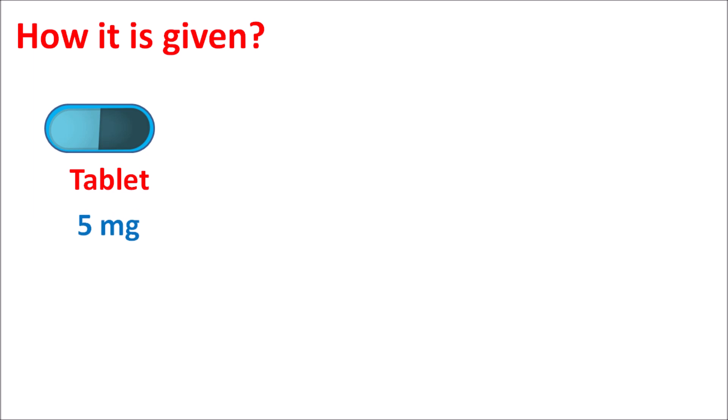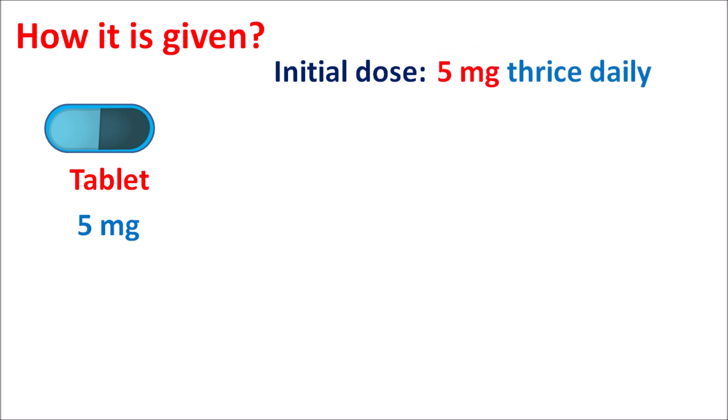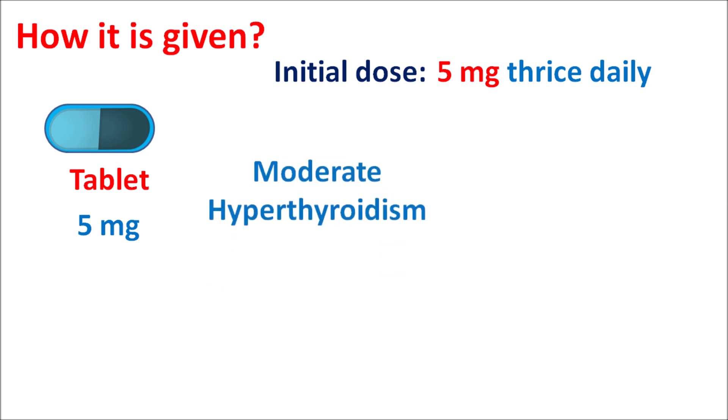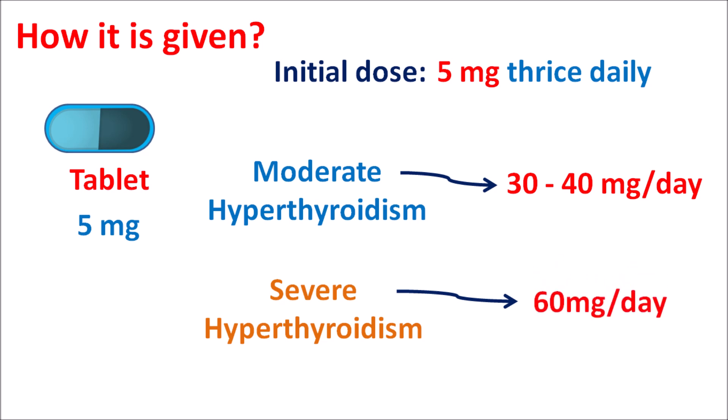Methimazole is available as a tablet at a strength of 5 mg. The initial dose for mild hyperthyroidism is 5 mg given three times daily — a total daily dose of 15 mg. For moderate hyperthyroidism, the dose is increased to 30–40 mg per day, given as 10 mg three times daily. For severe hyperthyroidism, the dose is further increased to 60 mg per day given as 20 mg three times daily, though at this high dose there is risk of hypothyroidism and increased risk of agranulocytosis, requiring monitoring for leukopenia and neutropenia.